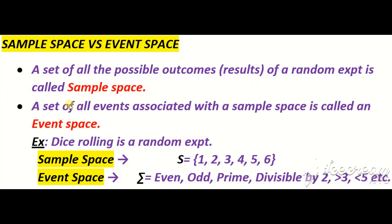اب یہ event space کیا ہوتا ہے؟ اس کو ہم یہ define کرتے ہیں: a set of all events associated with the sample space is called an event space. ایک sample space سے جتنے events associated یا connected ہوتے ہیں، ان تمام events کے مجموعے کو ہم event space کے نام سے جانتے ہیں۔